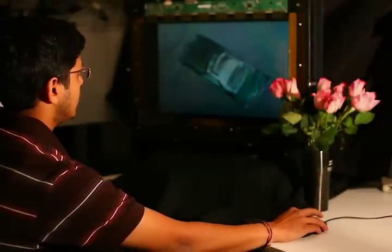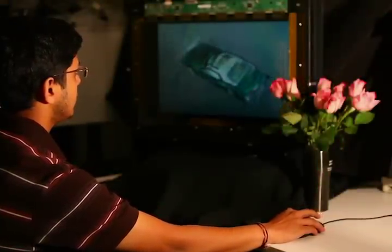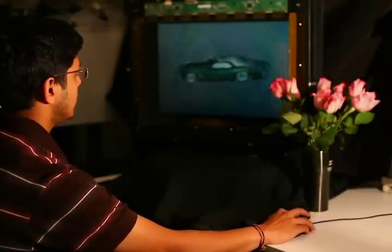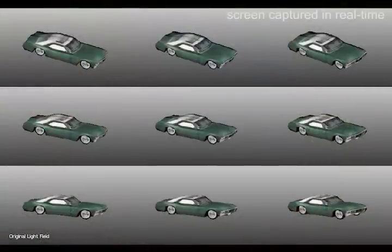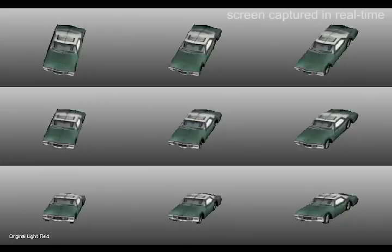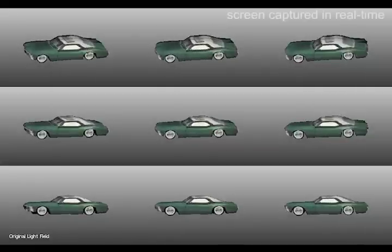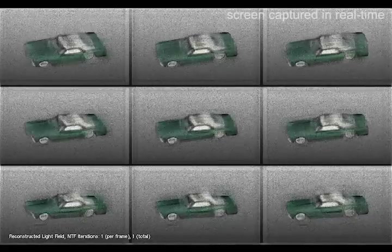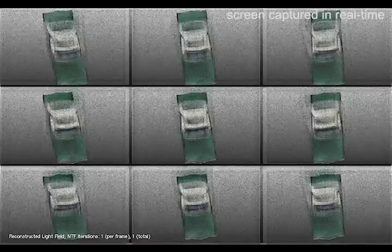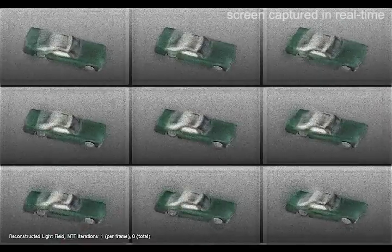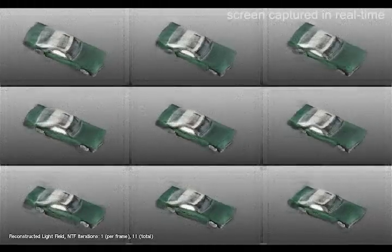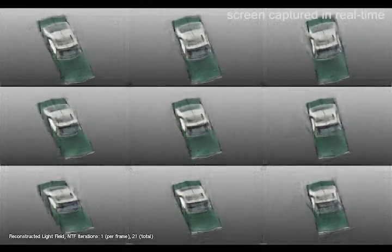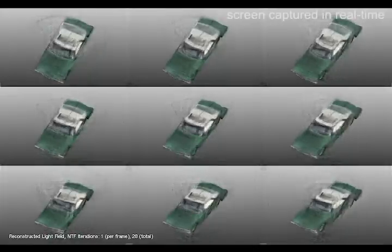We are exploring efficient GPU implementations of non-negative tensor factorization and achieve interactive frame rates for moderate image resolutions. For this purpose, we render a light field with OpenGL and run a single NTF iteration per frame. While this results in noisy reconstructions when the optimization is initialized with random values, as is common practice, we exploit temporal coherency of the presented content by seeding the optimization of the next frame with the output of the current frame.